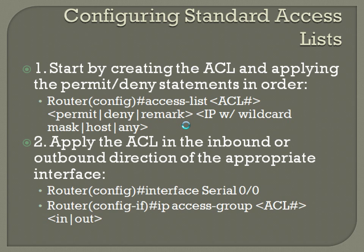Once you've created the ACL, apply it in the inbound or outbound direction of the appropriate interface. From global configuration mode, enter interface configuration mode — for example, interface serial 0/0 — then use the command: ip access-group, the ACL number, then in or out. On a serial interface like a T1, if applied inbound it's traffic coming from the public internet into your router; if outbound, it's traffic going from your router out to the internet or wherever that serial interface terminates.